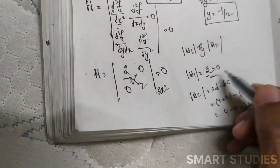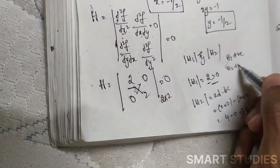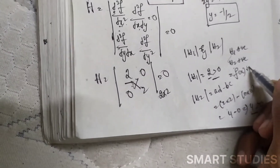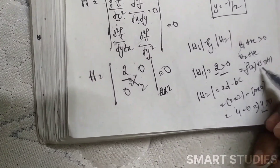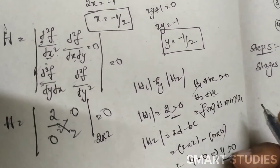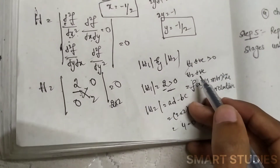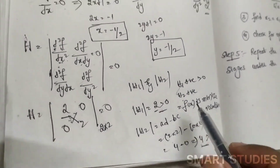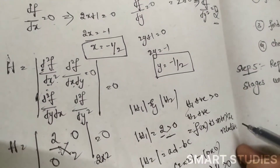Since H1 = 2 > 0 and H2 = 4 > 0, both principal minors are positive. Therefore, the given function f(x, y) = x² + y² + x + y − 1 has a relative minimum at the critical point (x, y) = (−1/2, −1/2).